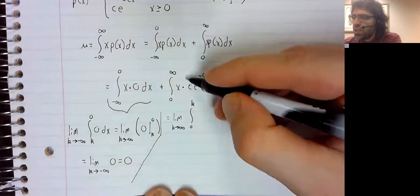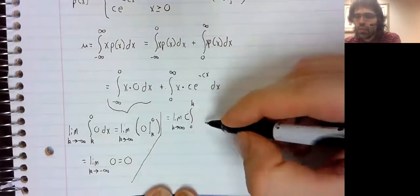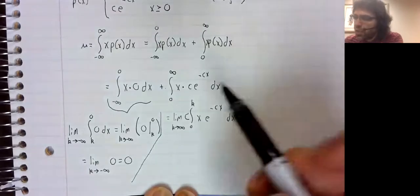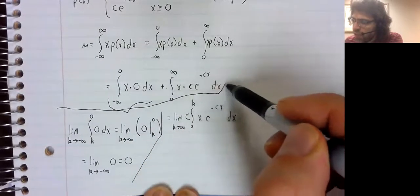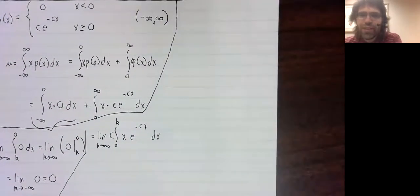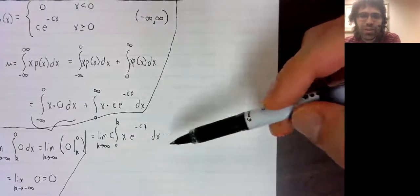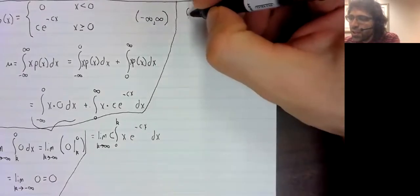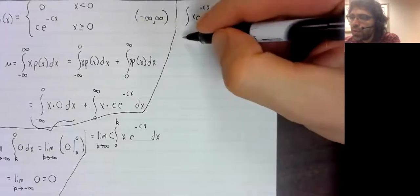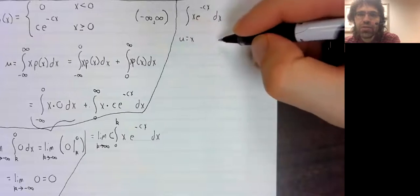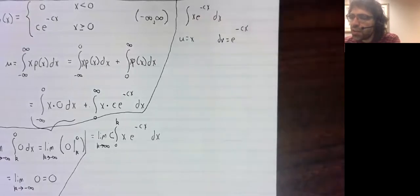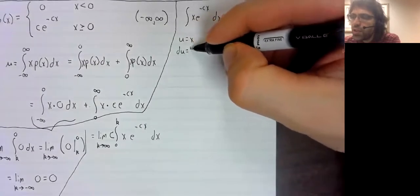Let's take this c and just pull it out of the integral. And we are probably going to have to go on to a second page, but I'll valiantly make the effort to complete this all here. The indefinite integral, ignore the limits for the moment. We'll let u be x, and dv be e to the negative cx. Then du is 1,